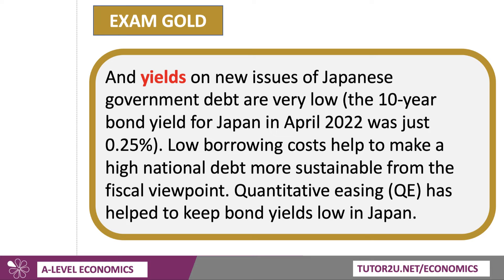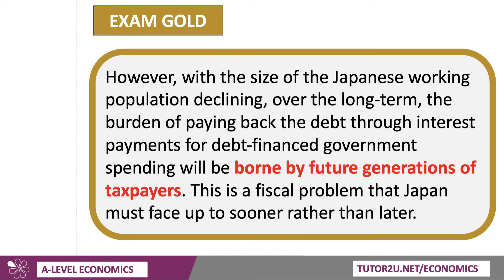Quantitative easing, or QE, has also helped to keep bond yields low in Japan, with the Bank of Japan acting as a major buyer of government debt, and therefore keeping the bond prices high and the bond yields low. However, with the size of the Japanese working population declining, the demography is working against Japan — it's one of the oldest populations in the world. Over the long term, the burden of paying back the debt through interest payments for debt-financed government spending will probably be borne by future generations of taxpayers. And there is a looming crisis there for Japan, in terms of the fact that Japan must eventually face up to this sooner rather than later.